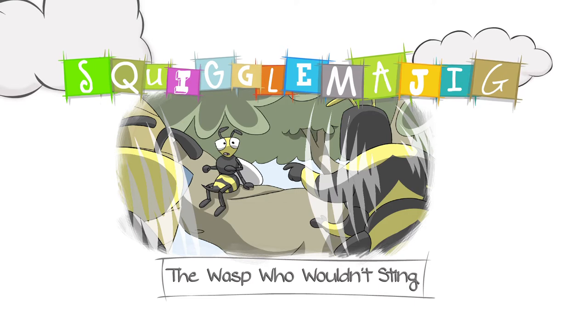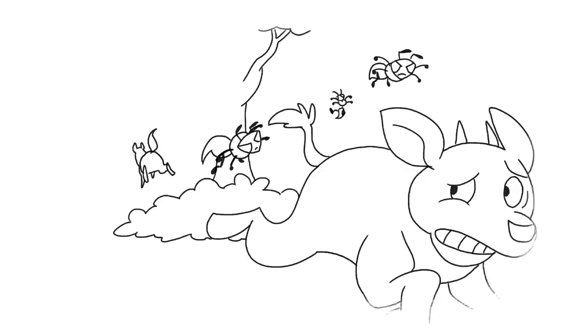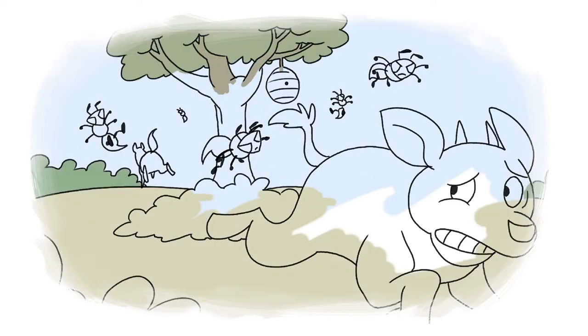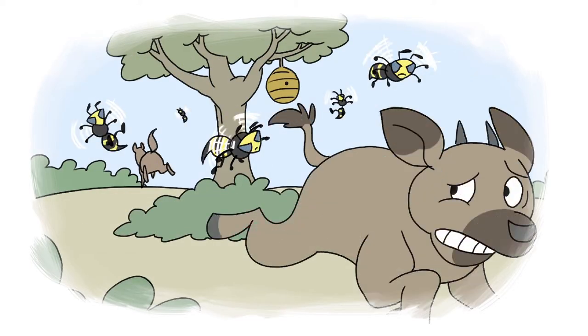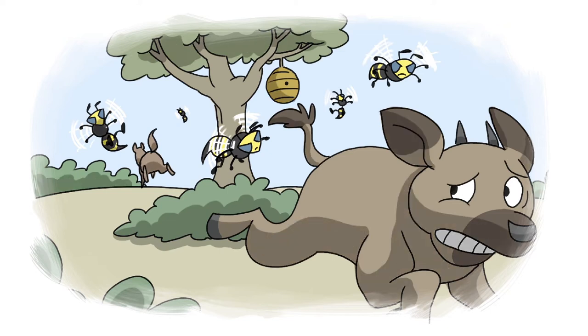The Wasp Who Wouldn't Sting. There was once a family of angry wasps who lived in a thorn tree. They always fought with everyone and were feared throughout the veld.